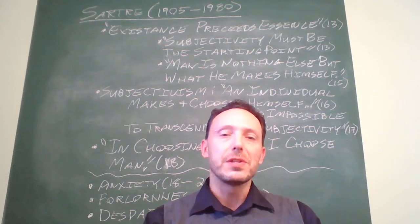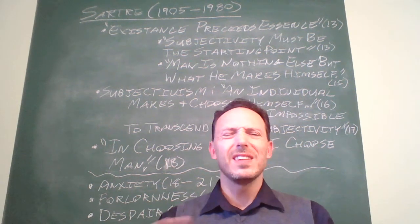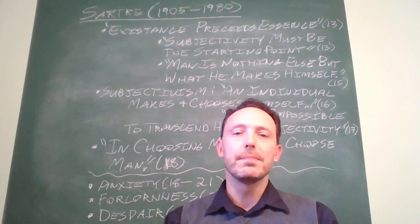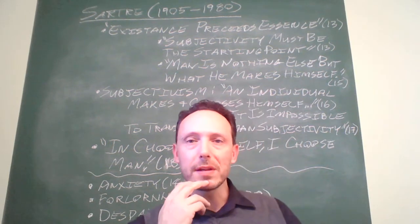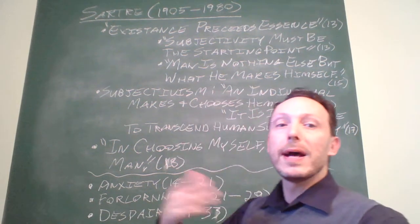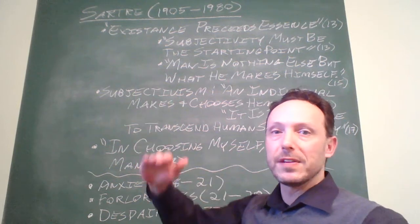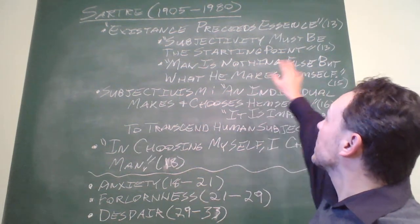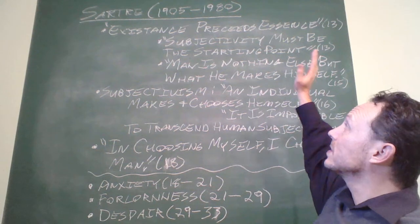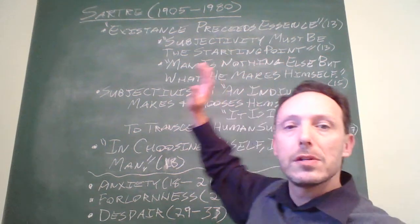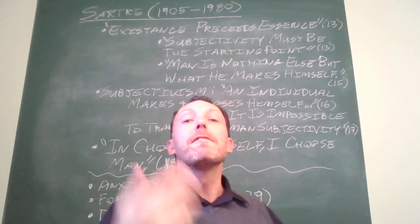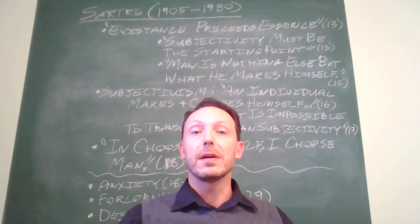Effectively, what the existentialists have done, and I think, and we'll see some arguments for this, is rather than start with an objective definition, point out that subjectivity, and this is page 13, must be the starting point. First we exist, and then we define ourselves.